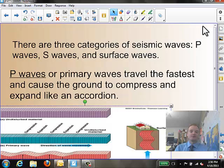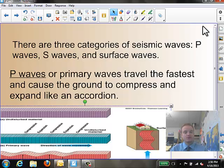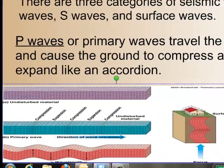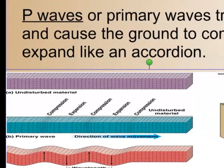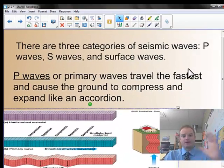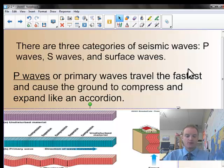There are going to be three major categories of seismic waves. We have P waves, we're going to call them primary waves. We have S waves, or secondary waves. And the final type, and the most destructive, are surface waves. Our first type are primary P waves. They travel the fastest and cause the ground to compress and expand like an accordion. Think of a slinky — if we were to pull just a couple springs back and let them go, they're going to compress and expand, they're going to get that accordion feel.